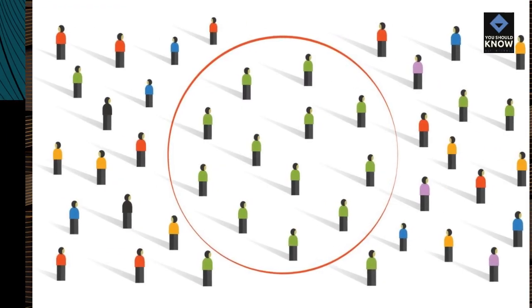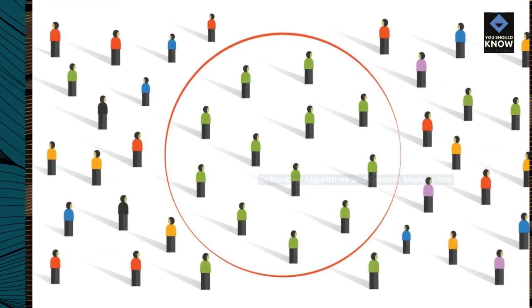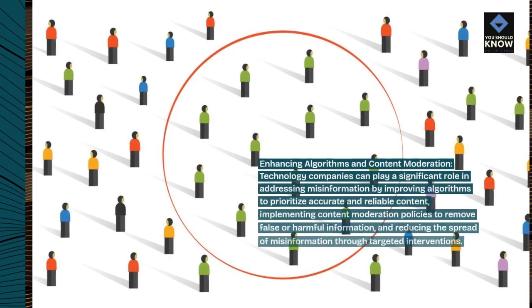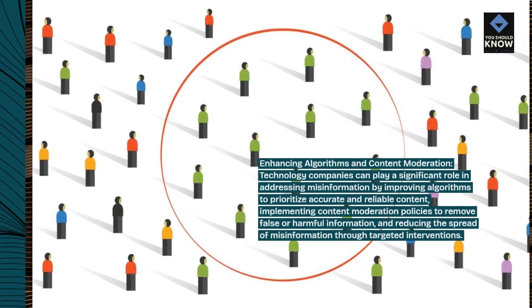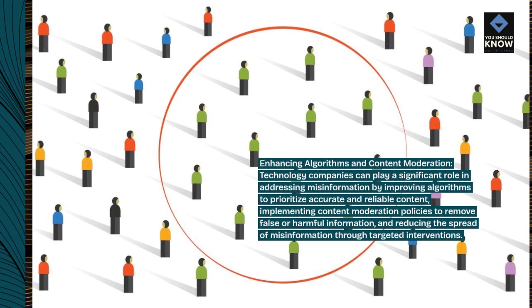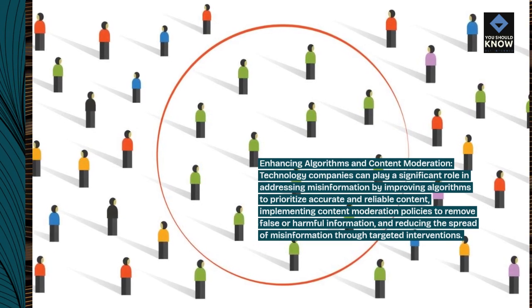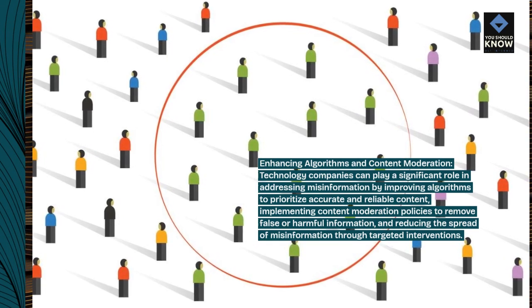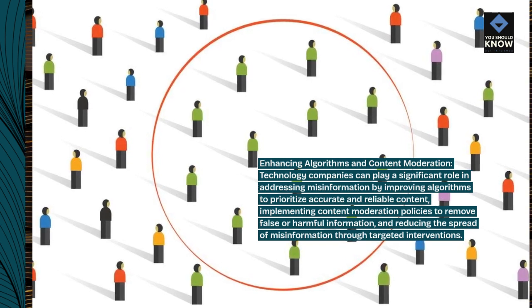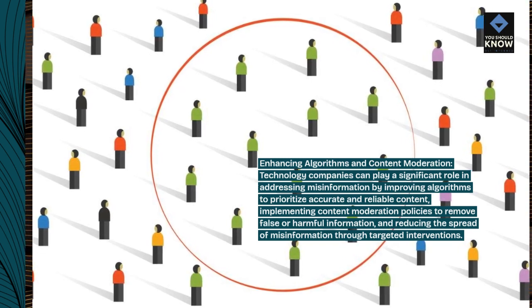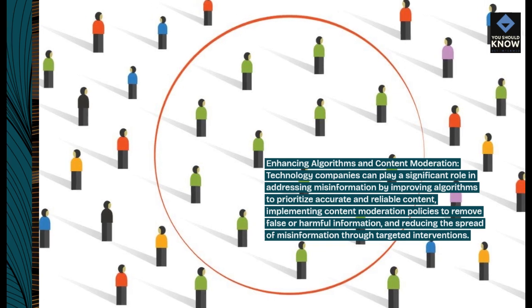Enhancing algorithms and content moderation. Technology companies can play a significant role in addressing misinformation by improving algorithms to prioritize accurate and reliable content, implementing content moderation policies to remove false or harmful information, and reducing the spread of misinformation through targeted interventions.